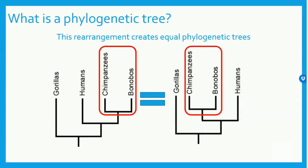The order of the branches doesn't matter either. As you see here, I can put the branch with the chimpanzees and bonobos in any order so long as the chronology of the branch forks below don't change. This can be difficult to understand at first, so pause the video and discuss with your classmates and look closely at the difference between the two phylogenetic trees here.